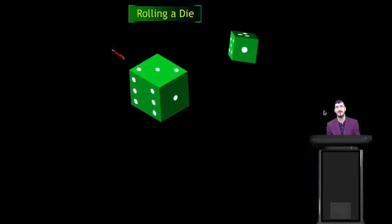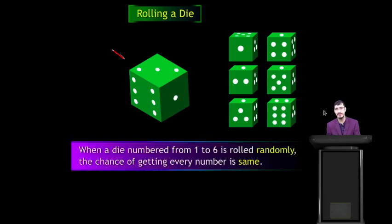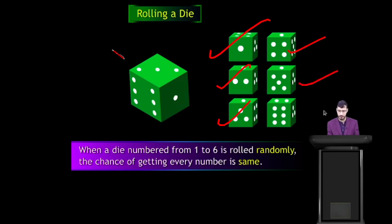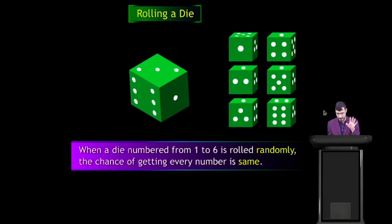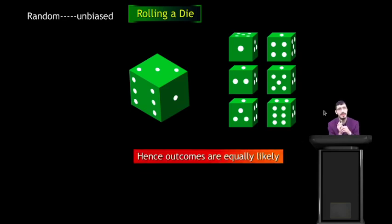These outcomes are equally likely. Rolling a die — the possible outcomes are 1, 2, 3, 4, 5 and 6. When a die numbered from 1 to 6 is rolled randomly, the chance of getting every number is the same — that means random equals unbiased. So the outcomes are equally likely.